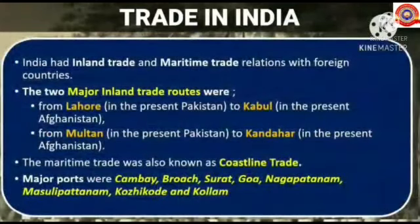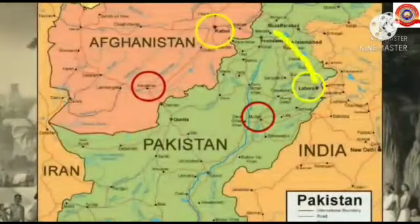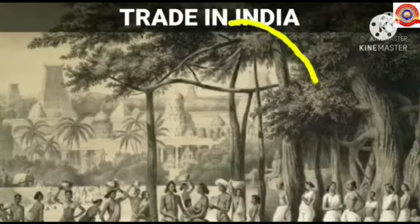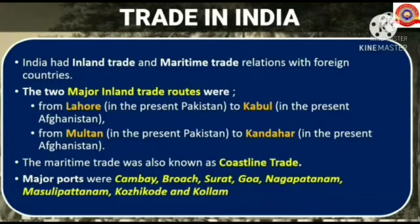India had inland trade and maritime trade relations with foreign countries. The two major inland trade routes were from Lahore in present Pakistan to Kabul in present Afghanistan, and from Multan in present Pakistan. The maritime trade was also known as coastline trade.